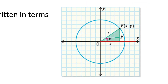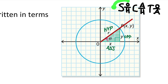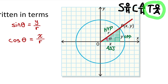Looking at this diagram, if I rotate some angle theta from an initial arm, the terminal arm will intersect a circle at some point with an x and y coordinate. To get to this point, I would move x units in one direction and y units in another, forming a right angle triangle with side lengths x, y, and hypotenuse r. Using SOHCAHTOA: sine of theta equals the opposite over the hypotenuse, so y over r. Cosine of theta equals the adjacent over the hypotenuse, so x over r. And tan of theta equals opposite over adjacent, meaning y divided by x.